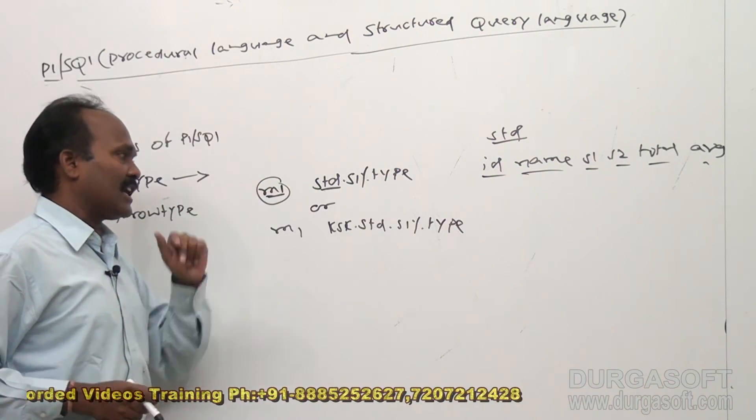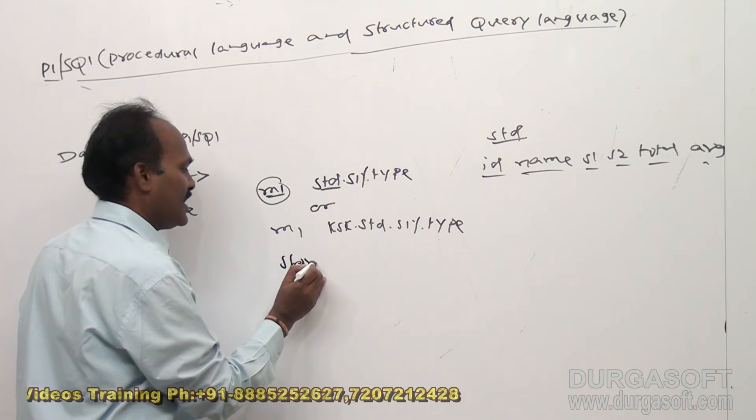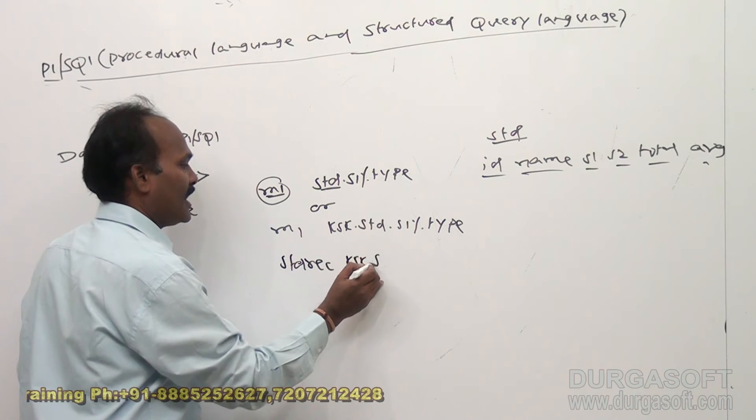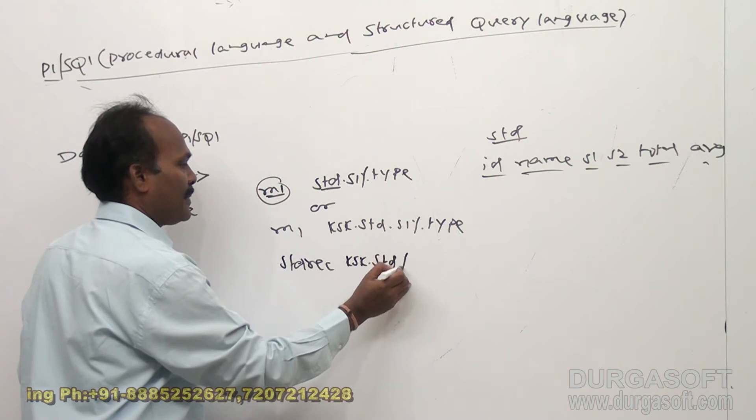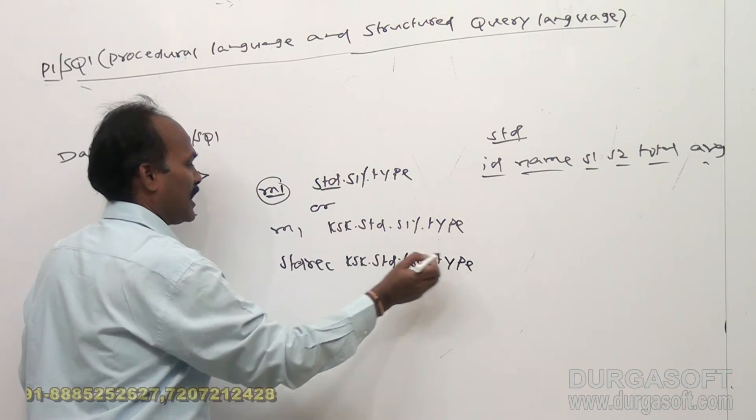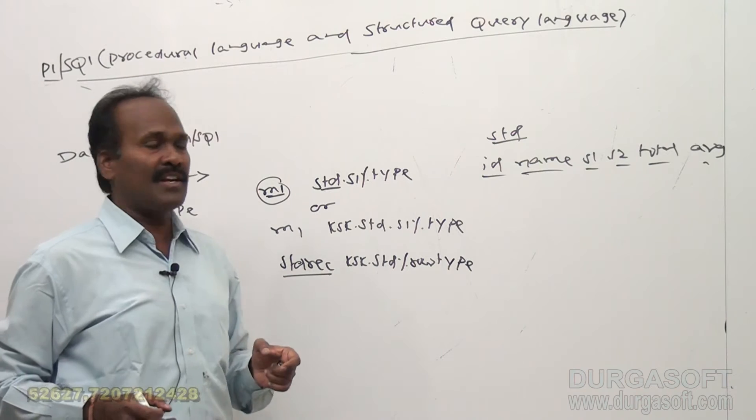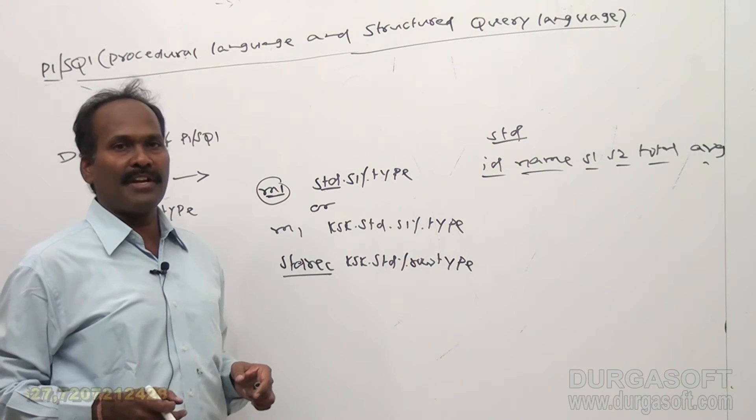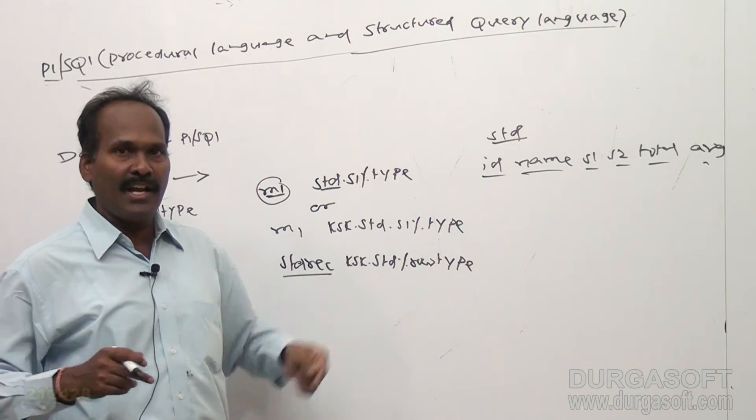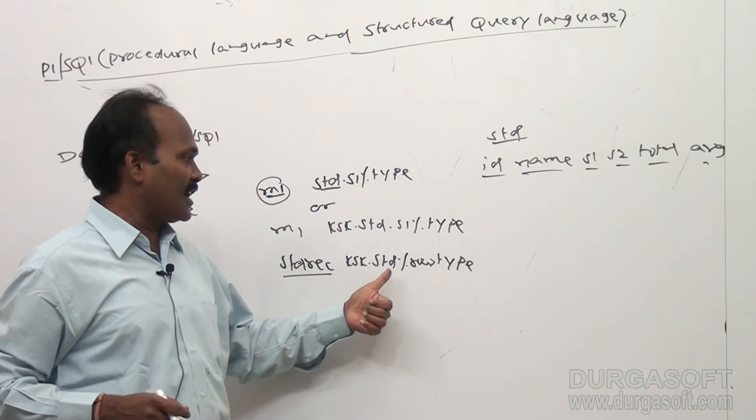So instead of declaring all these individual types, simply I can say like this: std_rec, ksk is the schema name, ksk dot std percentage row type. So percentage row type means std_rec includes all columns: id, name, s1, s2, total, and average. So this is a better way when compared to this one. That means instead of declaring variables individually, I can club as a group: std_rec ksk dot std dot percentage row type.